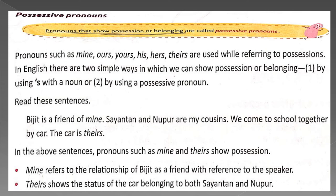Now let us talk about possessive pronouns. What are possessive pronouns? Pronouns that show possession or belonging are called possessive pronouns — for example, his, yours, mine, ours. In English there are two simple ways to show possession or belonging: first, by using apostrophe-s with a noun; and second, by using a possessive pronoun.